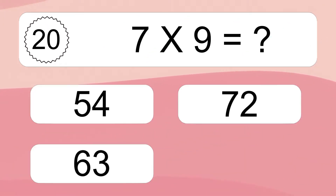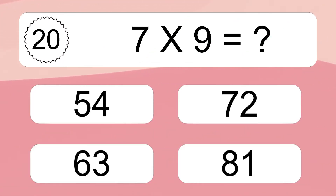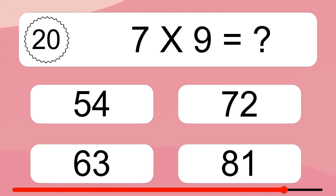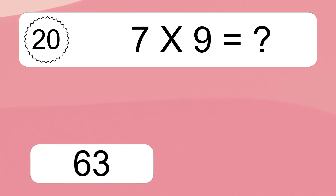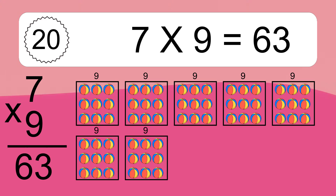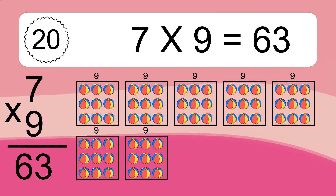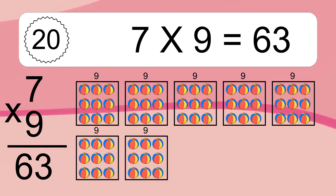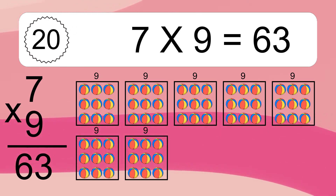7 times 9 equals what? 7 times 9 equals 63. We have 7 boxes, and each box has 9 colorful balls inside. If you count all the balls in all the boxes together, you will have 7 times 9 balls. This equals 63 balls.